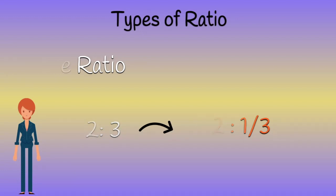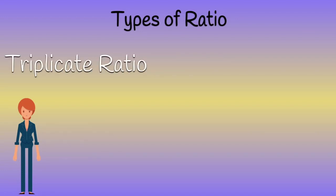Triplicate ratio: If a to b is a ratio, then its triplicate ratio is a cube to b cube. In our consideration, two to three, its triplicate ratio is two cube to three cube, that is eight to twenty-seven.